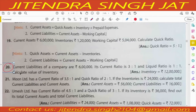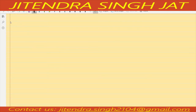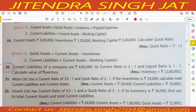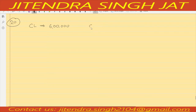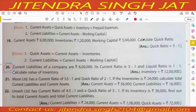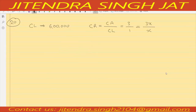Question number 20. Current liabilities of a company are 6 lakh. Its current ratio is 3 is to 1, meaning current assets upon current liability is 3 is to 1. Assuming current liability as X, current assets become 3X. Liquid ratio is 1 is to 1, meaning liquid assets upon current liability is 1 is to 1.